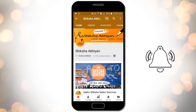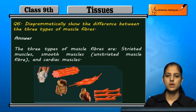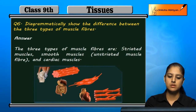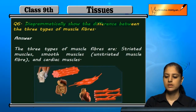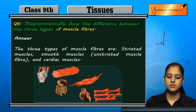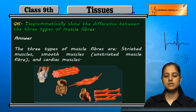Question number six: diagrammatically show the difference between the three types of muscle fibers. There are three types of muscle fibers.